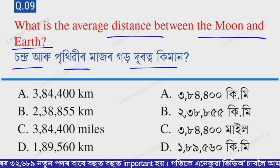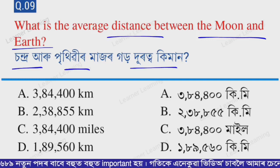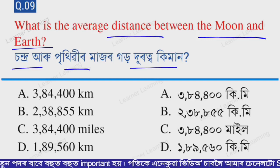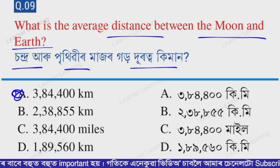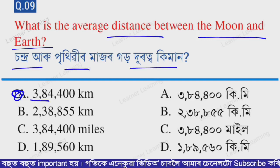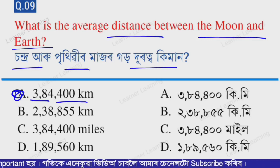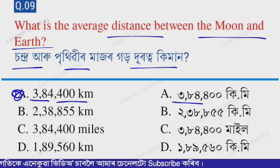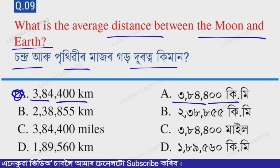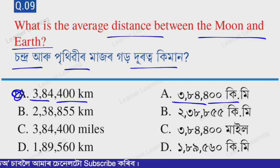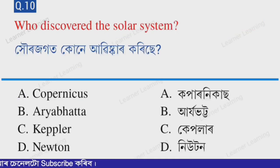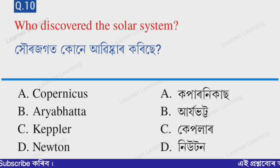Next question: What is the average distance between the Moon and Earth? Select from the options. Option A — three lakh 84,400 kilometers. That is the average distance between the Moon and the Earth.